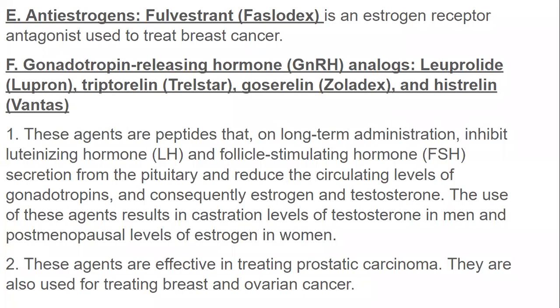Gonadotropin-releasing hormone (GnRH) analogs are peptides that, on long-term administration, inhibit luteinizing hormone (LH) and follicle-stimulating hormone (FSH) secretion from the pituitary, reducing circulating levels of gonadotropins and consequently estrogen and testosterone. Their use results in castration levels of testosterone in men and postmenopausal levels of estrogen in women.